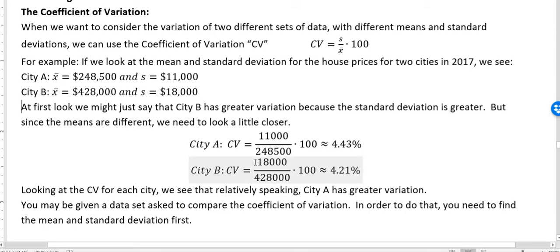For City B, taking the standard deviation of $18,000 divided by $428,000 and multiplying by 100 gives us 4.21 percent, rounded to the hundredths place.